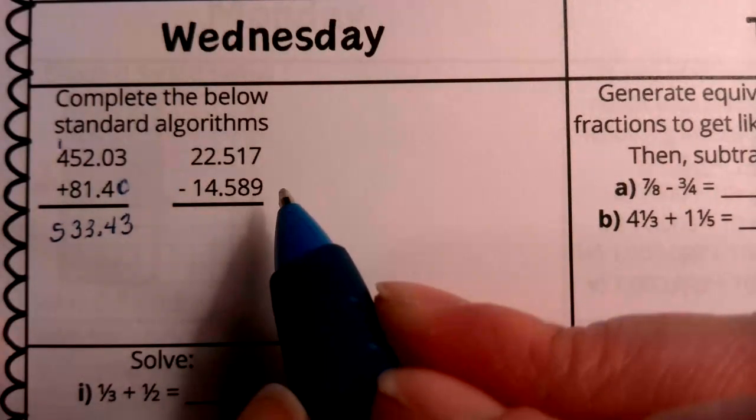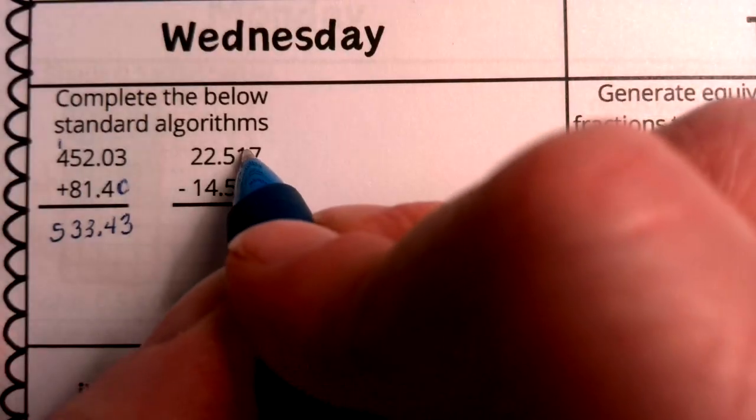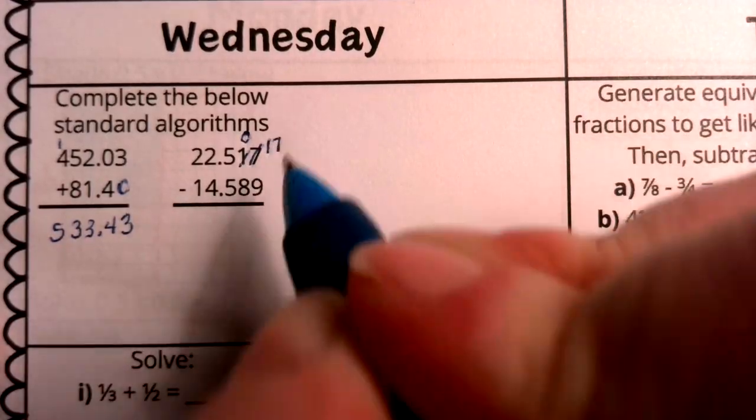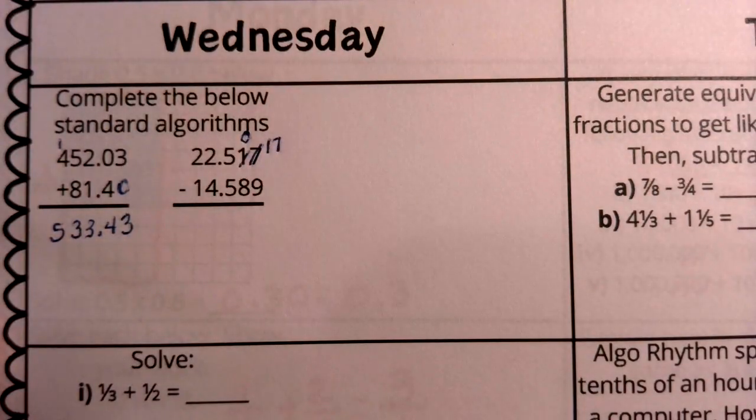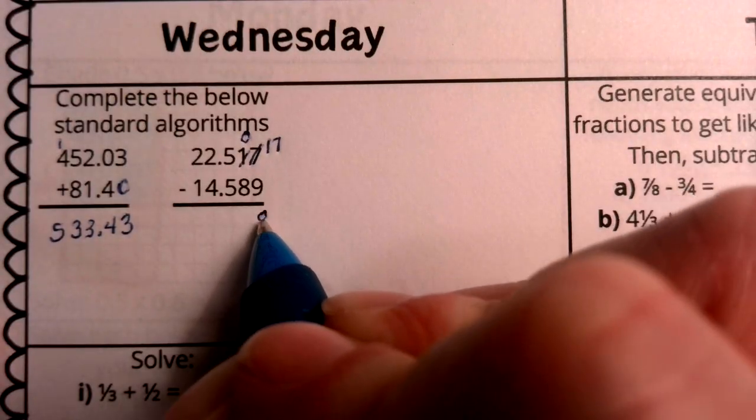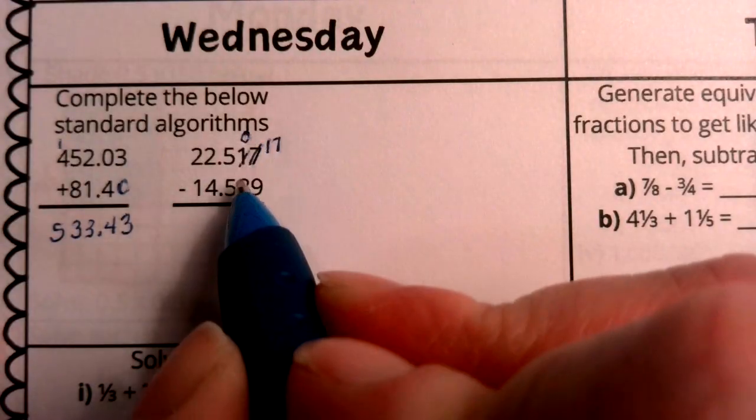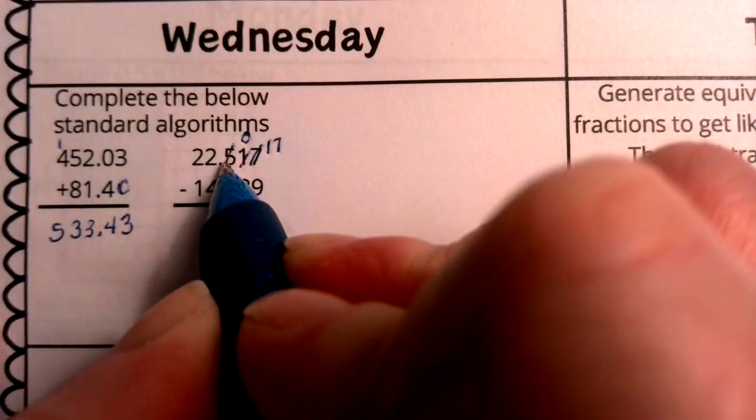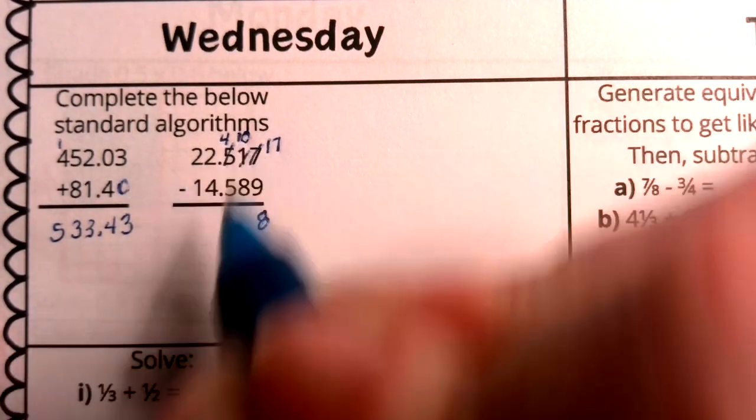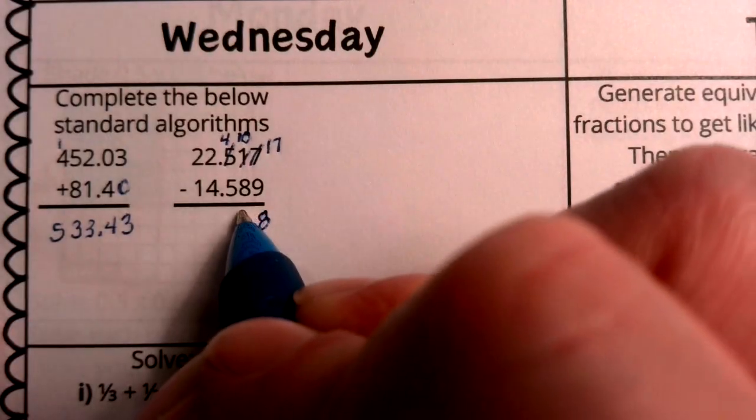Now let's go to subtraction. If I have 7, I can't lose 9. So I'm going to cross this off. I'm going to make this a 0, and I'm going to go 10 to the 7, making it a 17. Now I have 17 minus 9, which is 8. Now I have 0, so I can't lose 8. I'm going to cross off this 5. I'm going to make it a 4, where this 0 gets 10, and I have 10 minus 8 is 2.